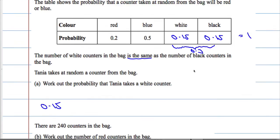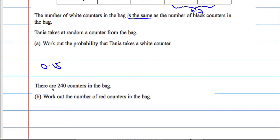Same number of counters, same probability. Okay, there are 240 counters in the bag. Work out the number of red counters in the bag.